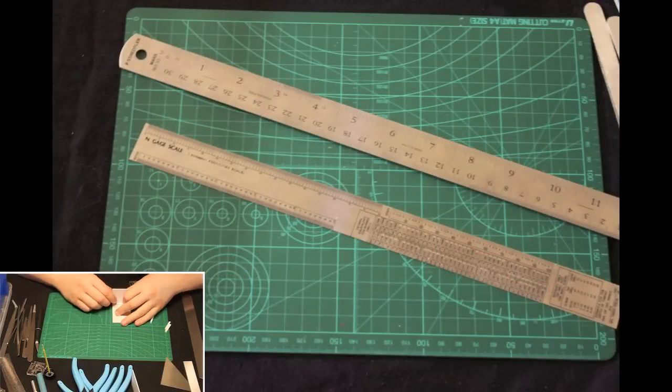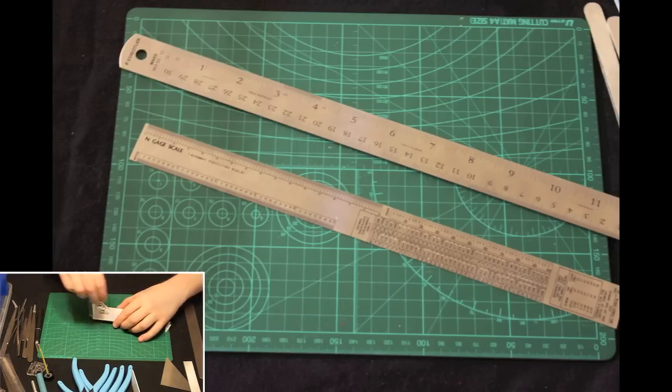A few more tools that you're going to have to have is a ruler and then a scale ruler. I've got a ruler with cork back to hold the piece real well while I make my cuts. And then the scale ruler to make all my measurements.